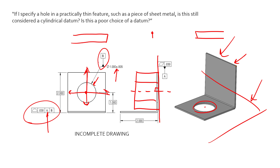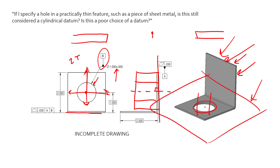Datum feature B is secondary — it's stopping those two degrees of translation. Datum A is stopping three degrees: one translation and two rotations. So we've locked things pretty much entirely down. Now if we're controlling this back surface with respect to A and B, what we're concerned with is making sure this functions as a stop in the assembly. One thing to point out: the issue does go away because B is a secondary datum. If we were to use B as a primary datum — a cylinder — and try to use that short axis to locate and orientate other features, that would be very problematic.